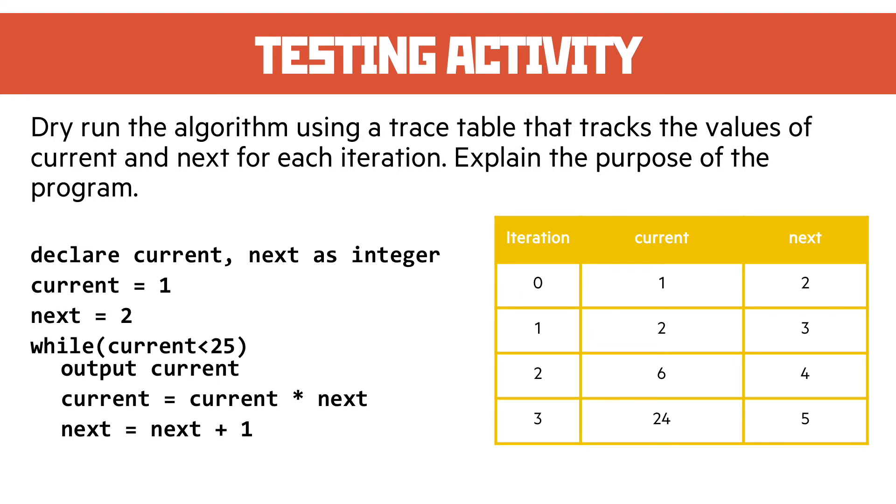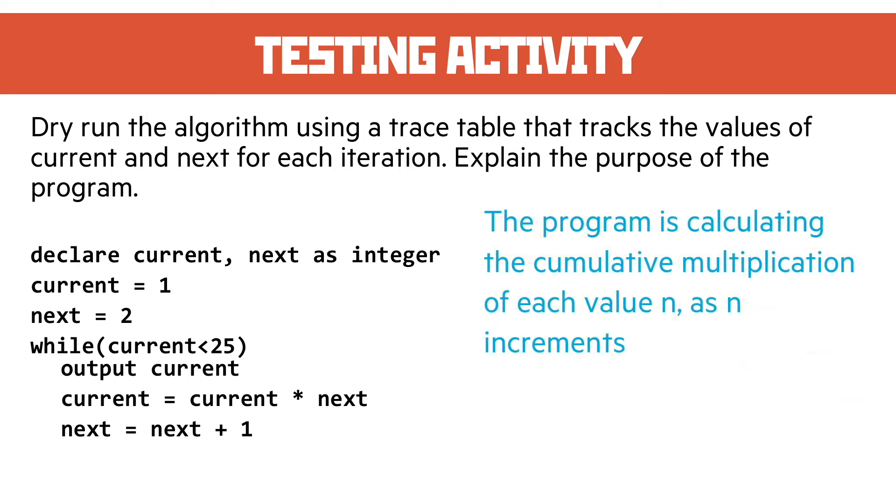That looks like to me the program is calculating the cumulative multiplication of each value. So what it's doing is it's multiplying the current value by the next value each time - it's a cumulative multiplication. These sort of questions are reasonably straightforward as long as you can follow the pseudocode given.